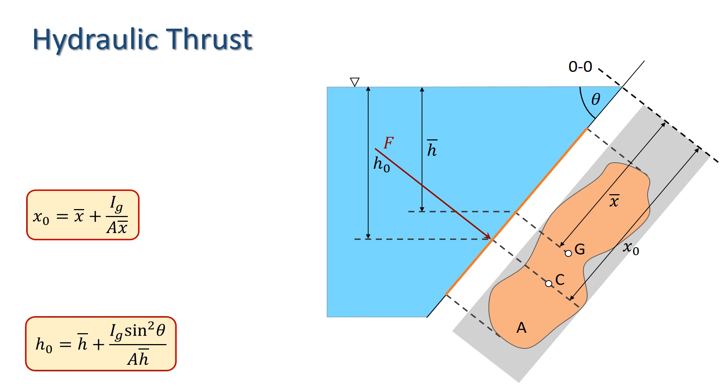We now have everything we need to determine the hydraulic thrust on a plane surface. The magnitude of the thrust is given by the pressure at the centre of gravity times the area, or rho G h bar times A. Its direction is perpendicular to the plane, and its line of action acts through the centre of pressure C, the position of which is given by a distance from OO, X0, or the pressure head at C, H0.